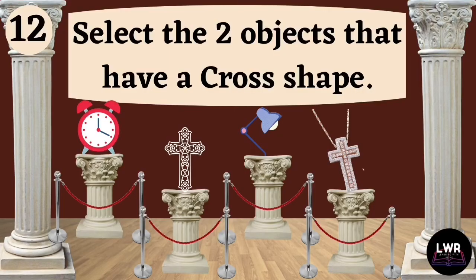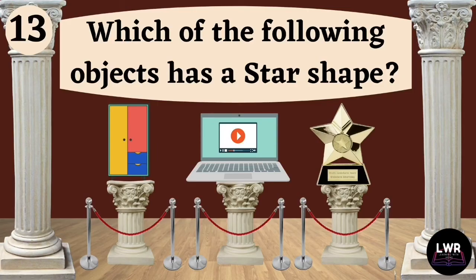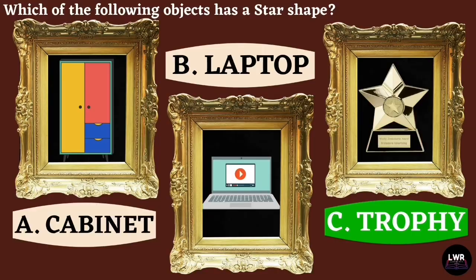Question number twelve: select the two objects that have a cross shape. The correct answer is letter C, crucifix and pendant. Question number thirteen: which of the following objects has a star shape? The correct answer is letter C, trophy.